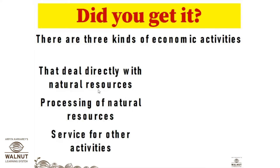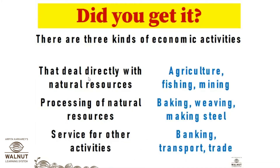The first kind deals directly with natural resources — examples include agriculture, fishing, and mining. The second step is processing of natural resources, where we can see baking, weaving, and making steel. The third step is service for other activities, where we can see banking, transport, and trade. These are the processes where economic activities are going on.